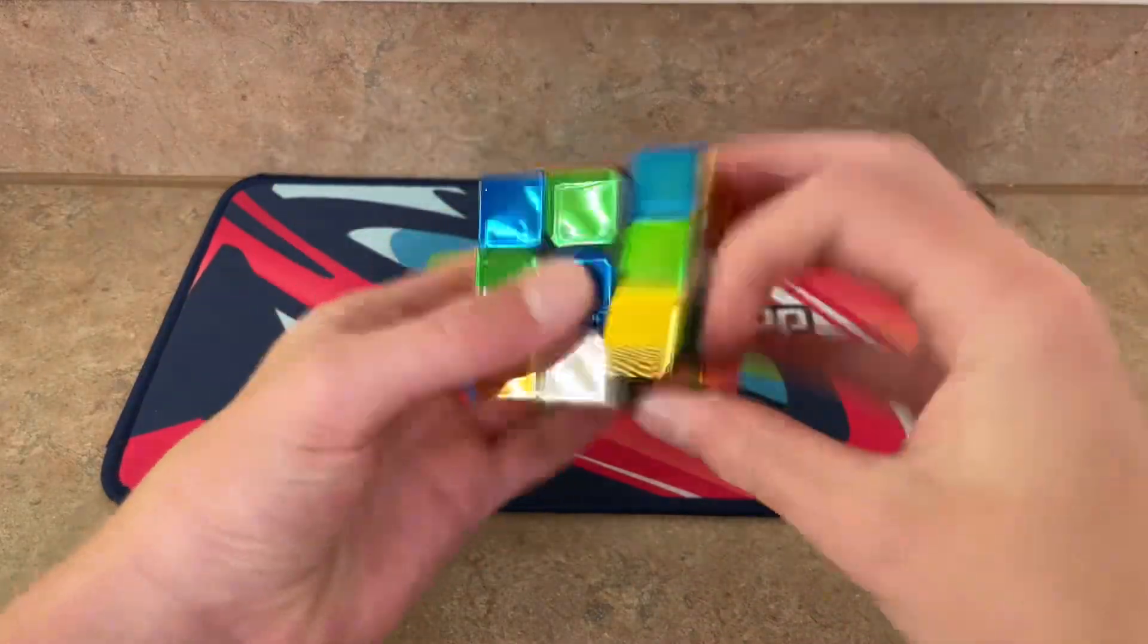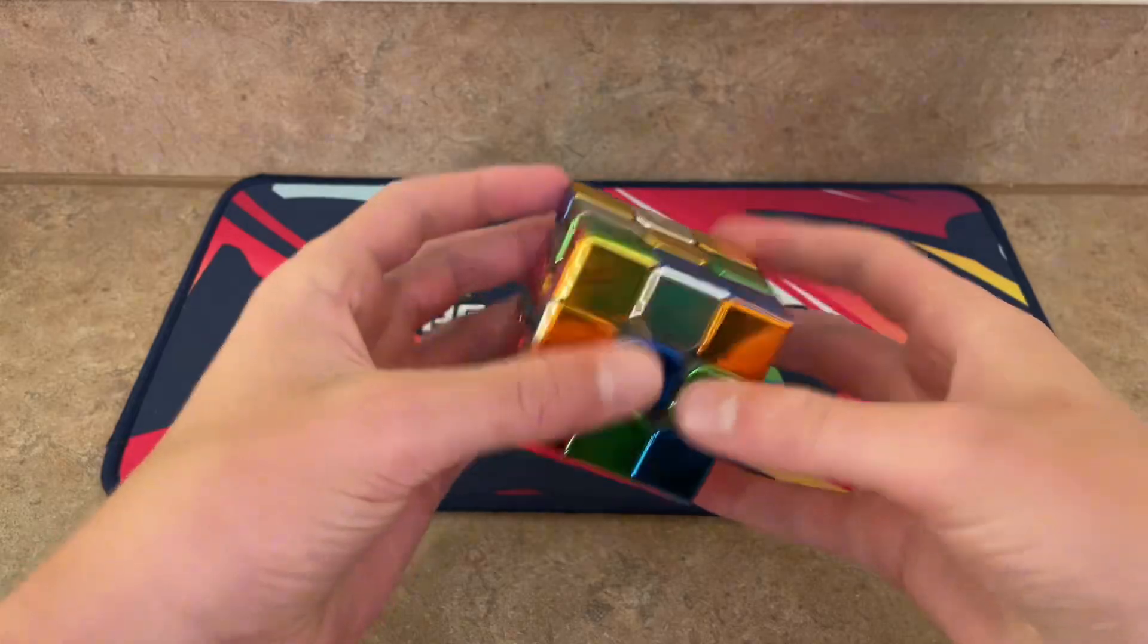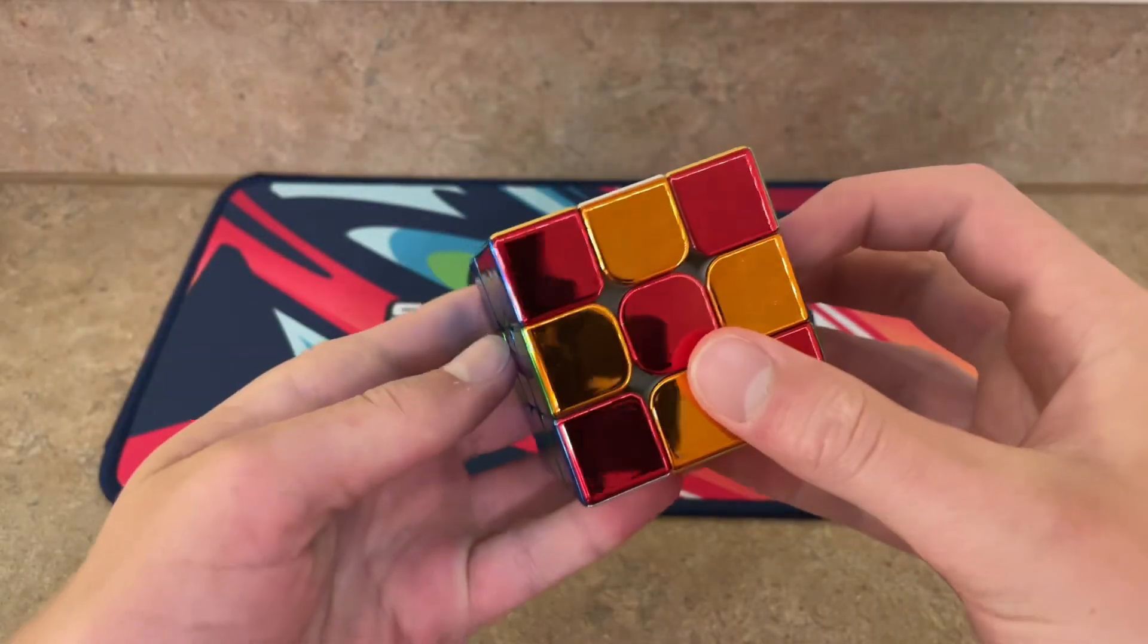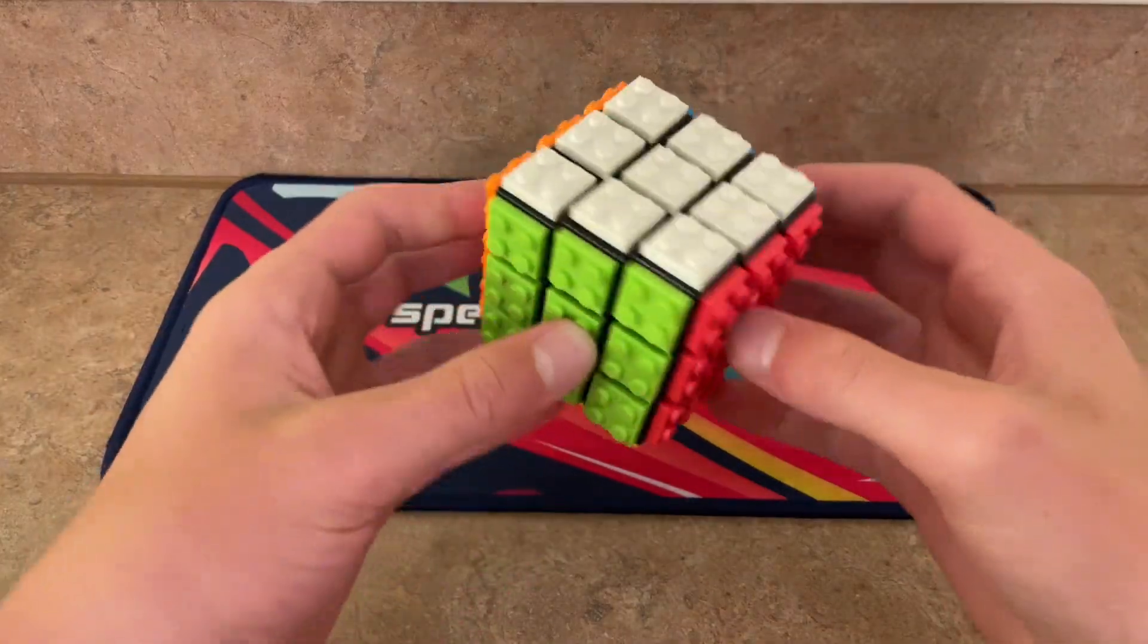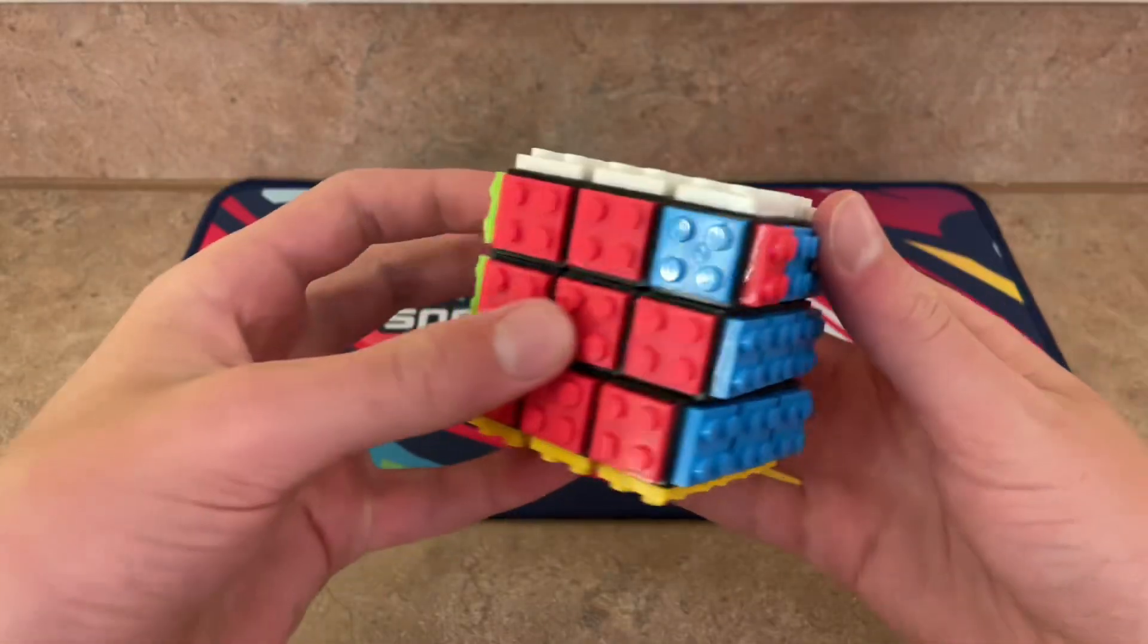This is the metallic 3x3. It looks really cool, but as you can see, the pieces pop off. This is the Lego cube. You can take the pieces off and put them back on however you want.